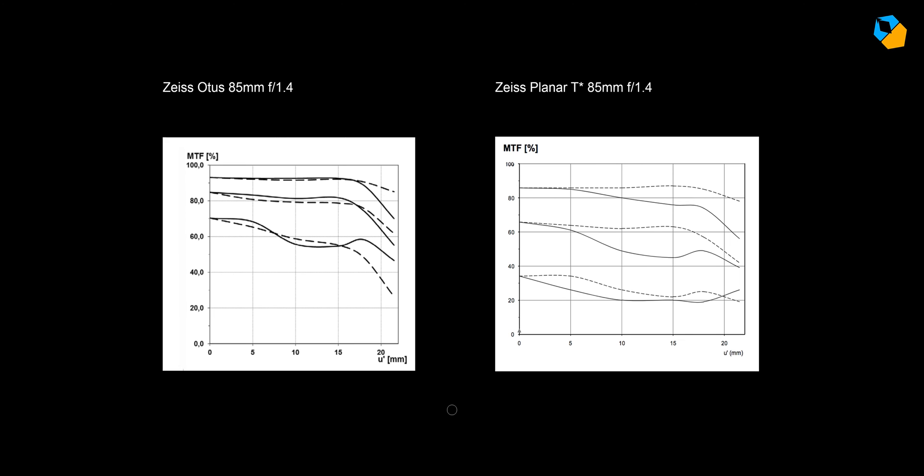Here's a quick comparison between the Zeiss Otis 85mm f1.4 and the Zeiss Planar 85mm f1.4, both wide open. These lenses were tested by Zeiss at 3 resolutions, 10, 20, and 40 line pairs per millimeter. For simplicity, I'll erase the 20. First, let's study the resolution line. Notice how the planar resolution line maxes out at about 35% in the center, while the Otis clocks in at 70%. That's a large increase in resolution.